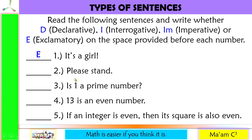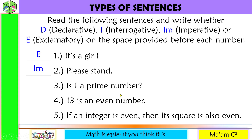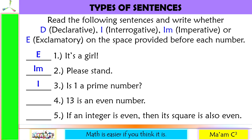Number two: 'Please stand.' This is imperative — you are making a command or request. Number three: 'Is one a prime number?' This is I, interrogative — notice the question mark. Number four: '13 is an even number.' This is a statement — this is D, declarative.